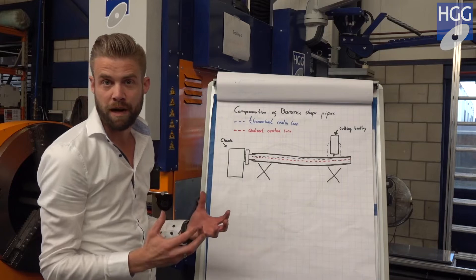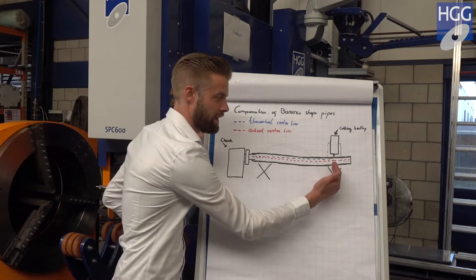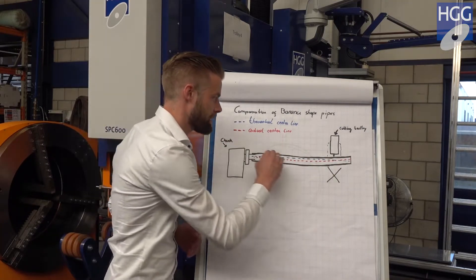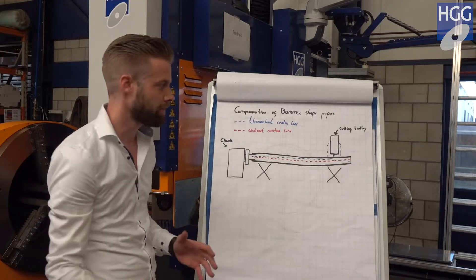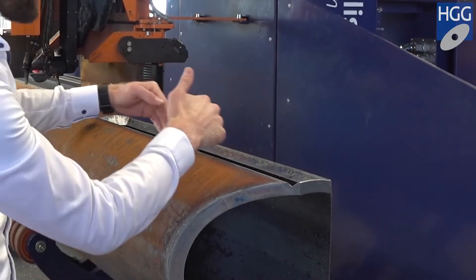When you position the pipe supports strategically like what we see over here, very close to the main drive as well as very close to the cutting trolley, although the pipe has a banana shaped form, it makes sure that at the position where you are cutting the cut is exactly at where it should be.